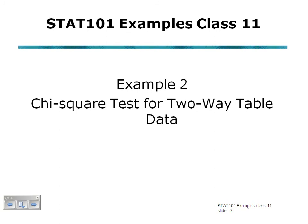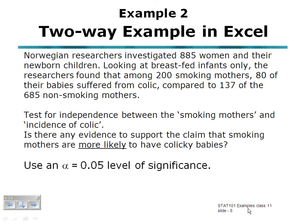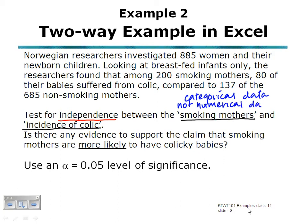This example comes from some Norwegian research investigating whether there's a relationship between babies having colic and mothers who were smokers. They've investigated 885 women, looking at breastfed infants only. We're looking to test for independence, or whether there is no relationship between mothers smoking and babies having colic. Notice these are categorical data values — either the mother smokes or does not smoke, and either the baby has colic or does not have colic. So this is qualitative data, not numerical data. All we're doing is counting how many people were smokers and how many babies had colic. We're looking to determine whether there is any evidence to support the claim that smoking mothers are more likely to have colicky babies.